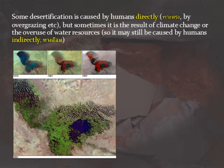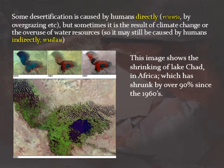This is Lake Chad over the last 30 years or so of the 20th century, and it shrunk by over 90% since the 1960s. As you can see, in 1973 it's a big blue lake that spans several countries in Africa, and by 2001 it's almost like an inland reef of small islands and swamps.